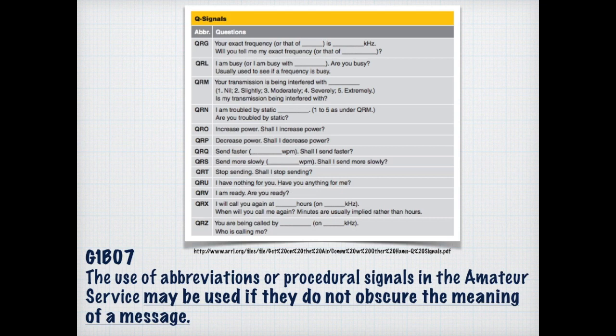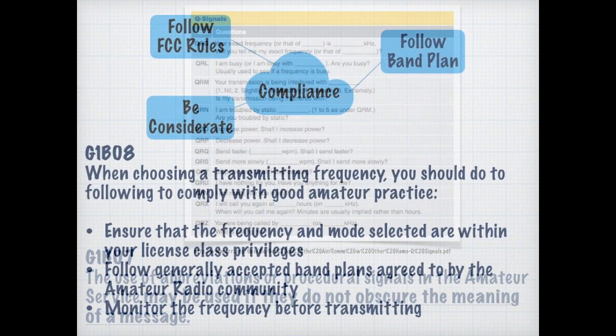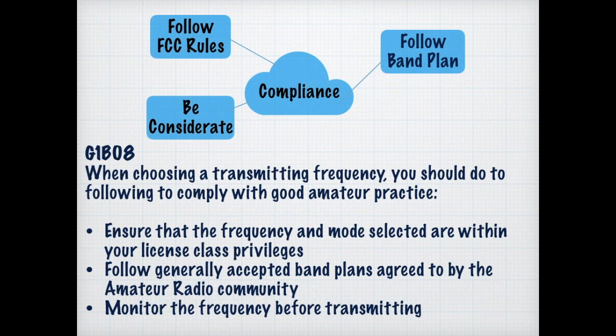Some of the things we're expected to do include ensuring that the frequency and mode selected are within our class privileges, following the generally accepted band plans agreed to by the amateur radio community, and monitoring the frequencies before transmitting. In short, we need to be considerate and follow the rules.